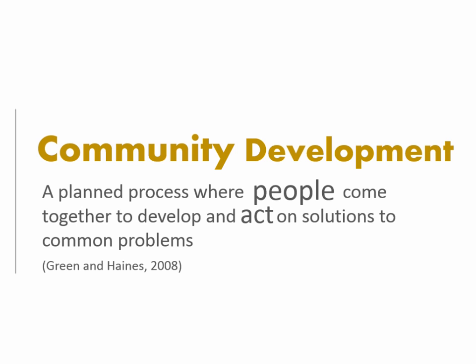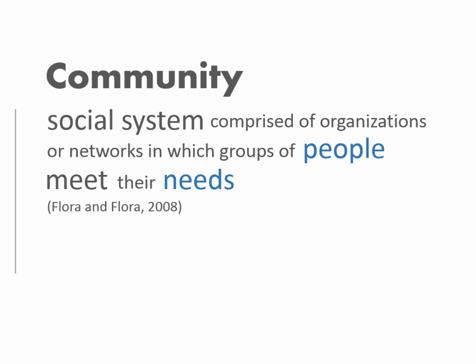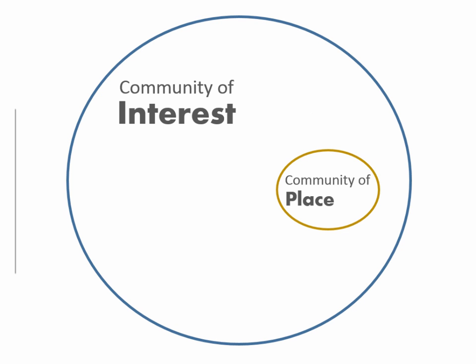Community development is a planned process where people come together and act on solutions to common problems. For the purposes of this research, a community is simply a system of individuals working together to solve problems and meet their needs. There are many types of community; I'm going with the distinction between communities of interest and communities of place — the former bound by shared interest, the latter by geographic location.